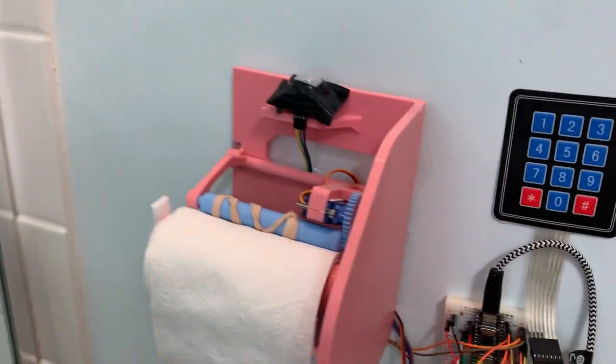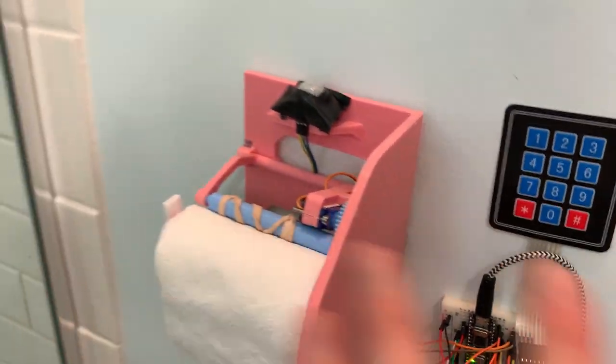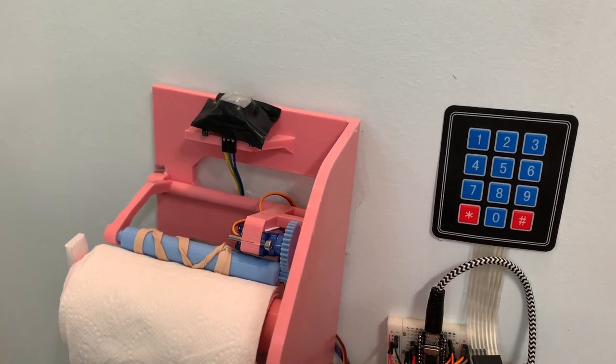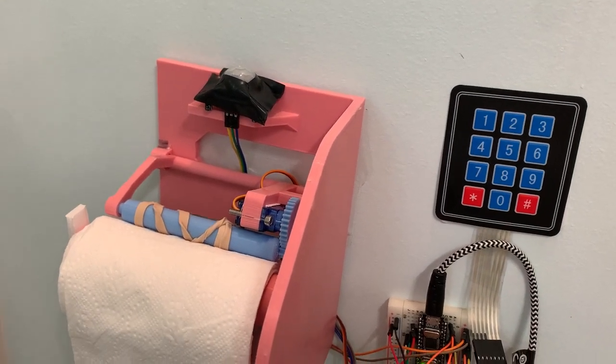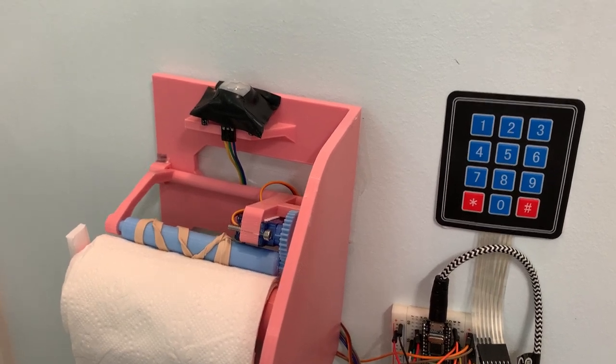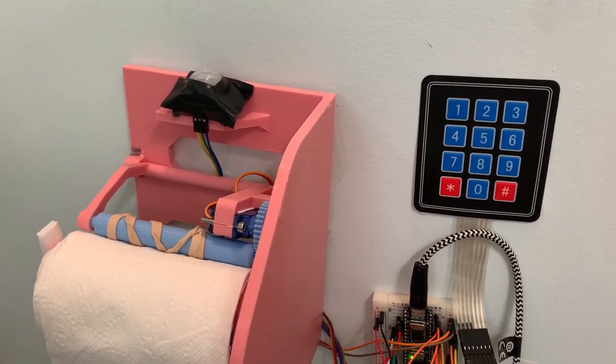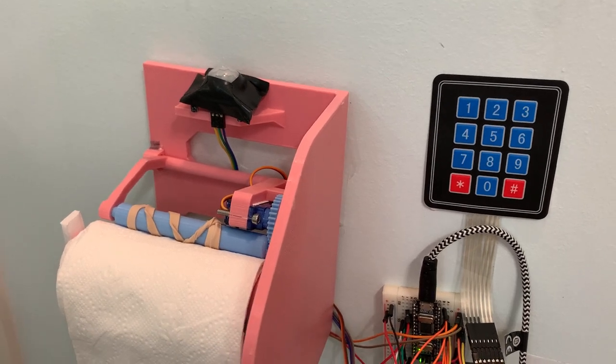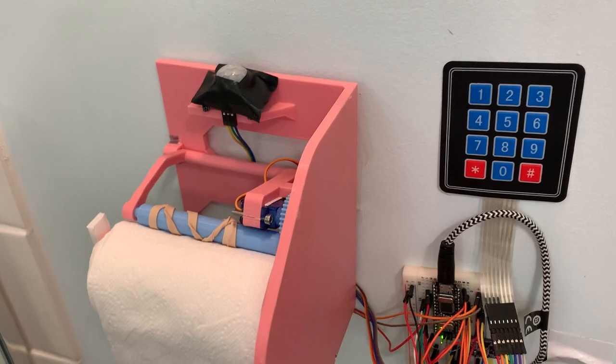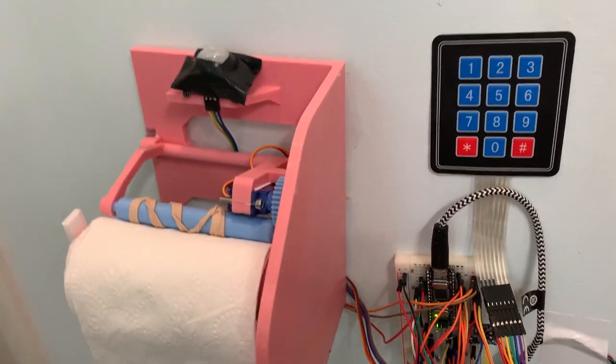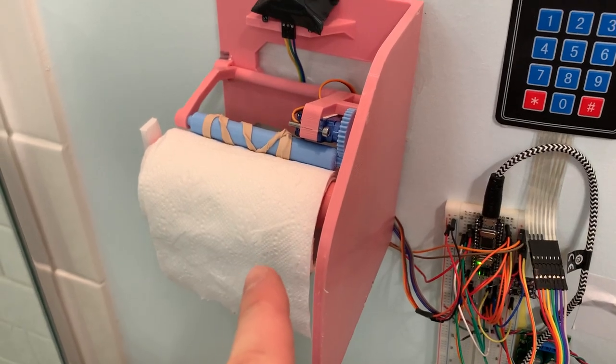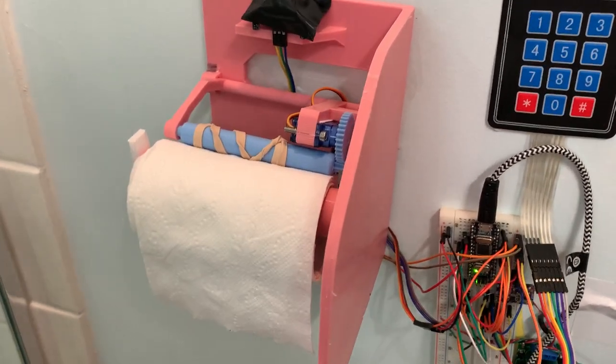I will be demonstrating the master user function and how all the settings can be configured, which changes the user PINs, resets user sheet counts, changes the number of sheets dispensed per cycle, and displays a list of all users' current total sheets used. I also show how the toilet paper tracker dispenses toilet paper via motion and show what happens when that roll of toilet paper is depleted and the alarm that goes off.